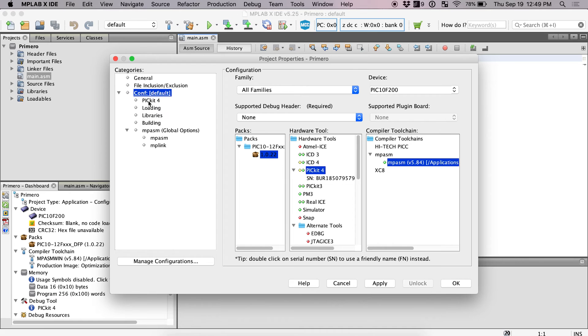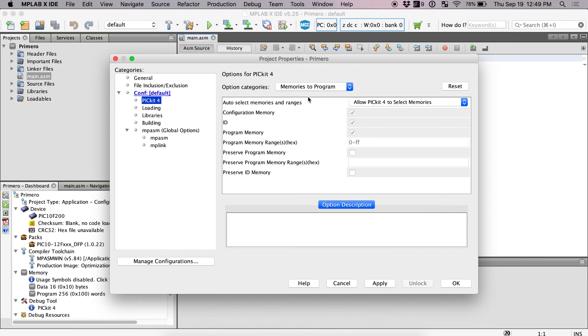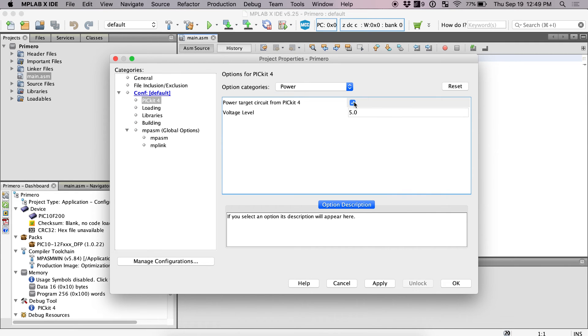And now on the left, mine says Picket 4. If you're using something else, it's going to be something different. Click Picket 4, then go over to Option Categories, drop down to Power, should be a little bit obvious, and then power target circuit from the Picket 4. And that's it.